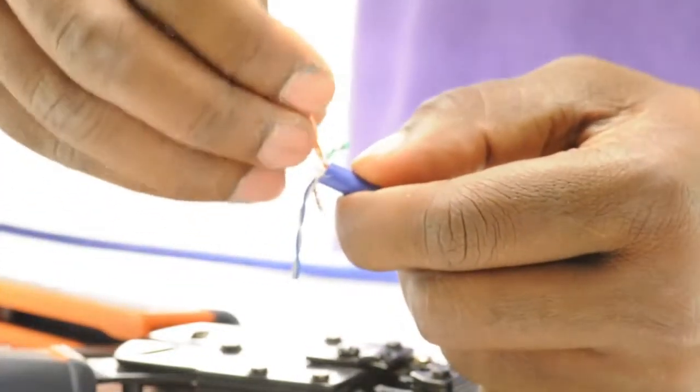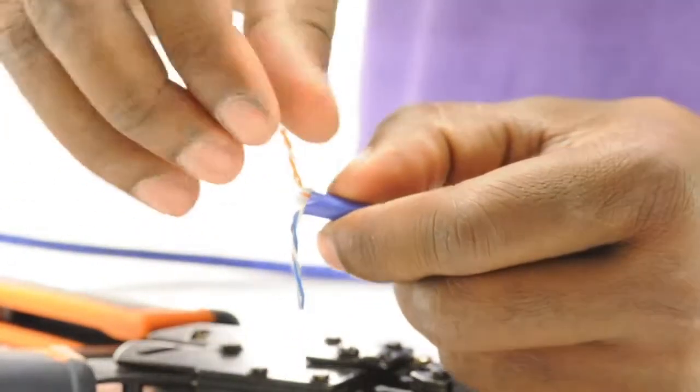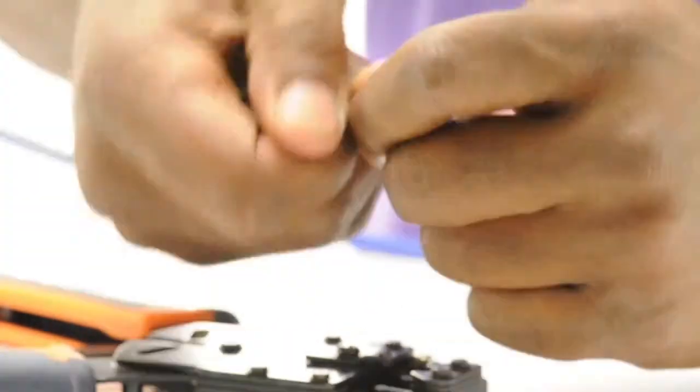Untwist and fan out the pairs. This will give you eight conductors. Then taking your fingers, you can straighten them out.